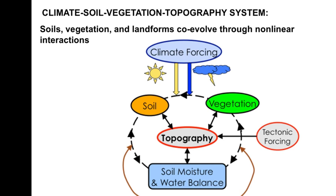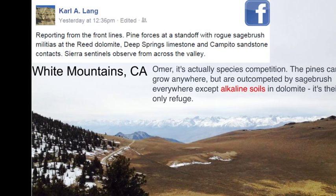You have the classic soil-forming factors: climate, organism, relief, parent material, and time — all of them are interacting with each other. For example, my friend showed how vegetation differs: these are pine and this is sagebrush. Pines can grow everywhere. I thought this was an aspect control, but unfortunately it's not — this is the underlying dolomite, with alkaline soils. Because of the interaction between parent material and overlying soils, there is only sagebrush here. This is how parent material controls vegetation type.